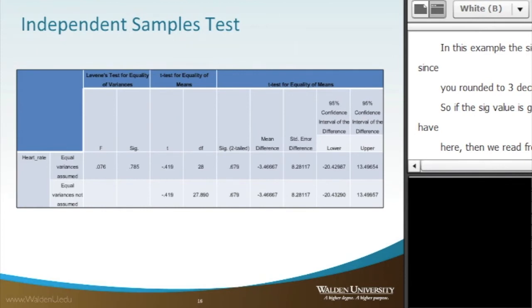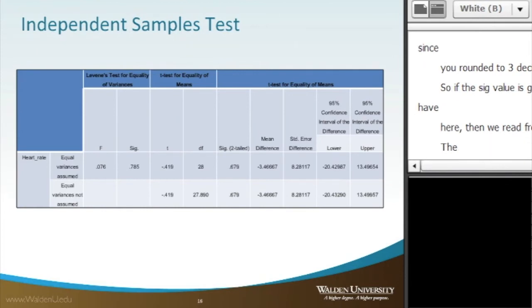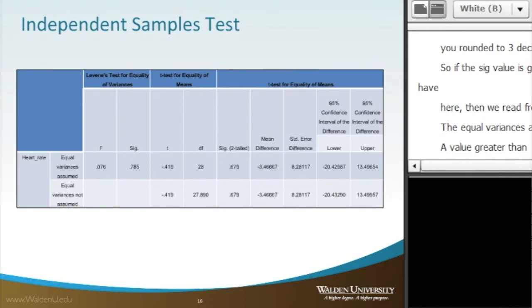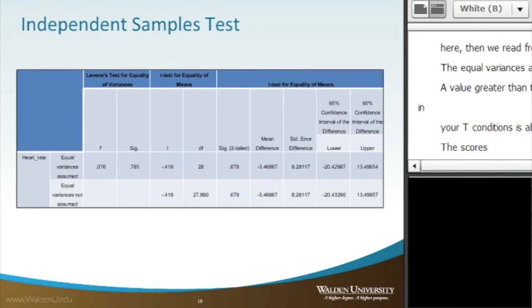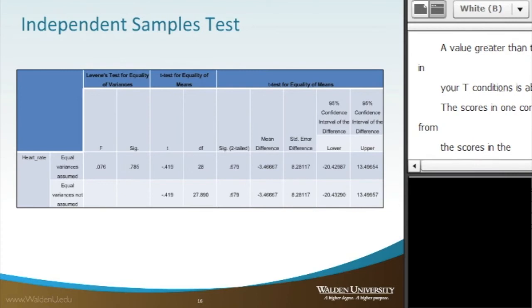A value greater than .05 means that the variability in your two conditions is about the same. That the scores in one condition do not vary too much from the scores in the second condition. In other words, it means that the variability in the two conditions is not significantly different.